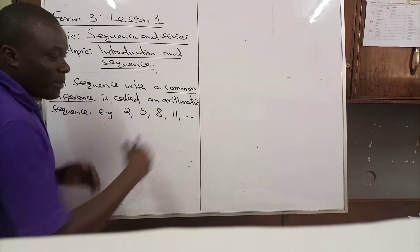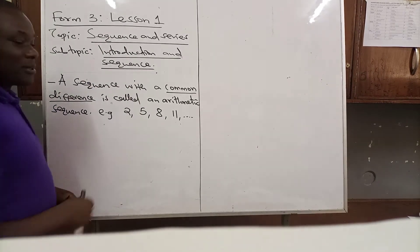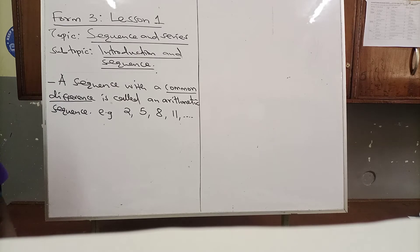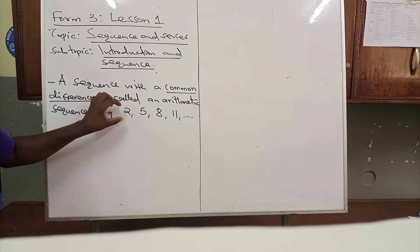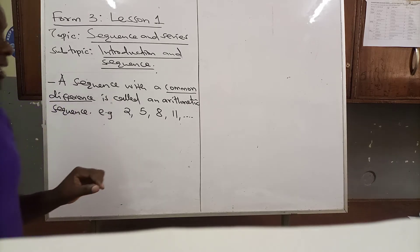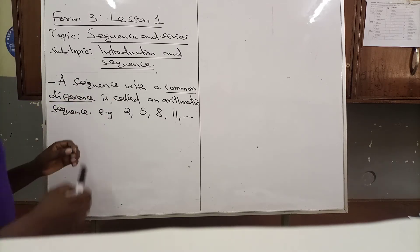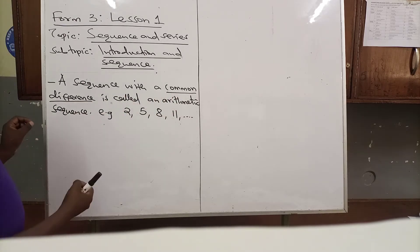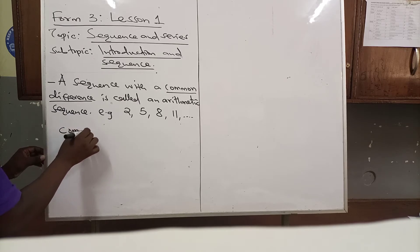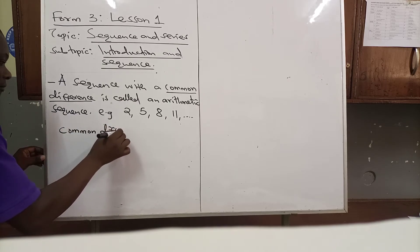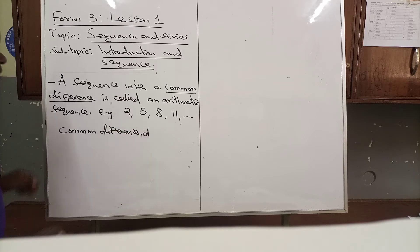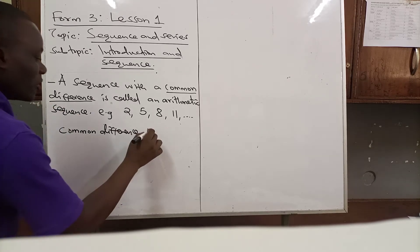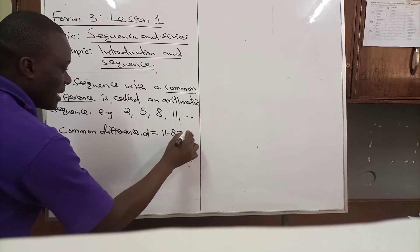In a sequence and series we call these numbers terms, so those are terms of the sequence. The number that comes first is known as the first term of the sequence. When you find the difference between two consecutive terms of a sequence you obtain what we call a common difference. We use small d as a symbol for common difference.